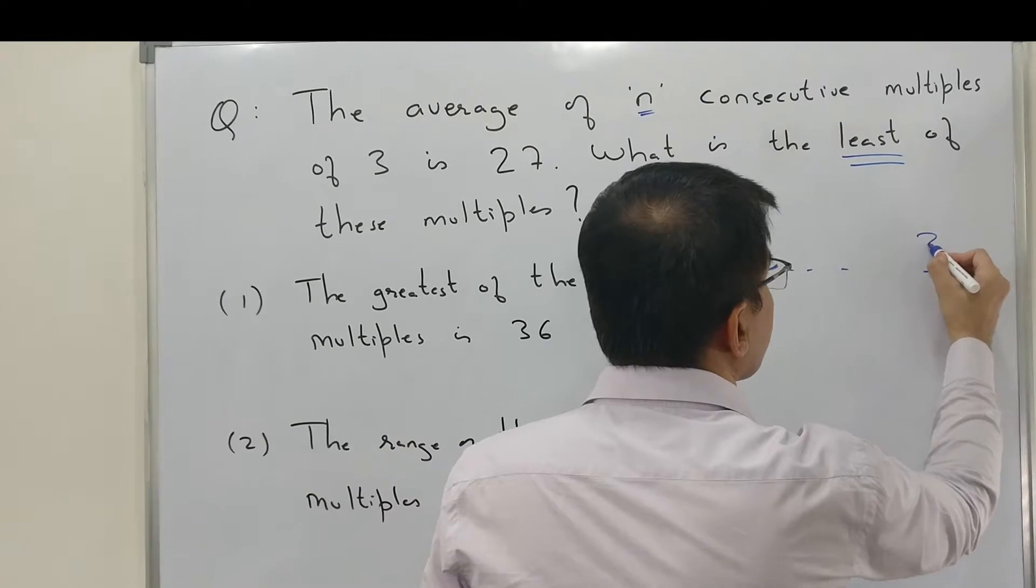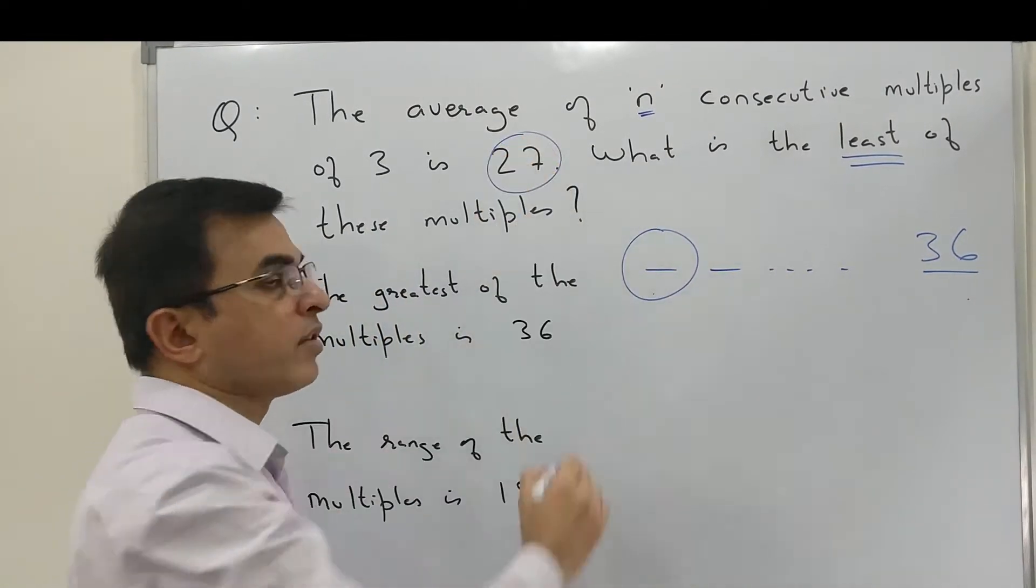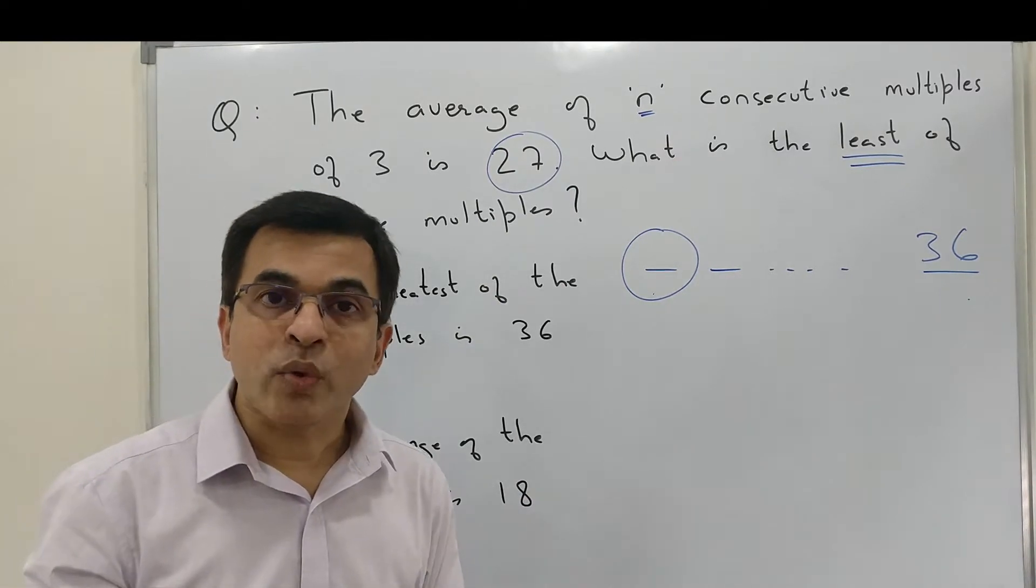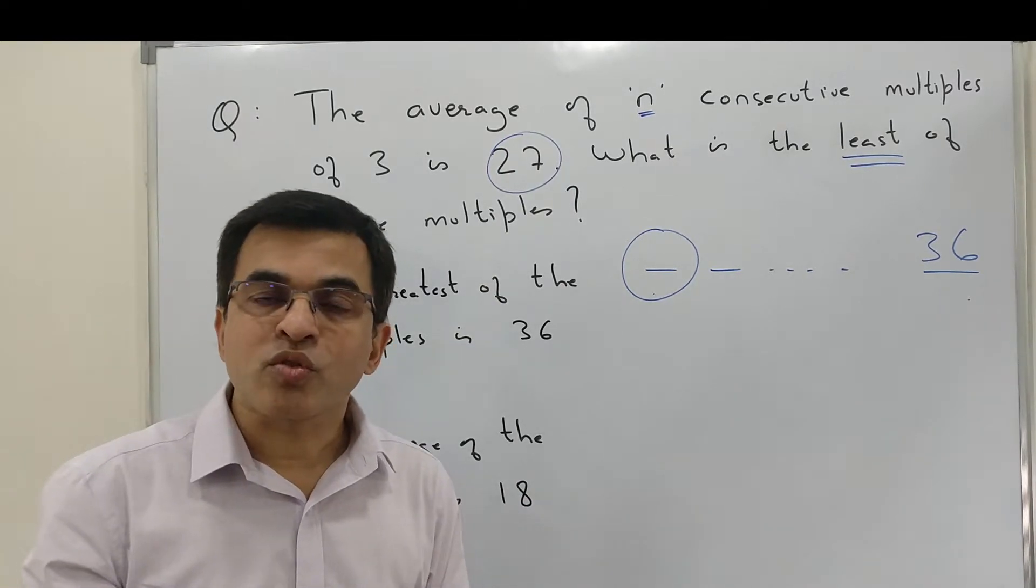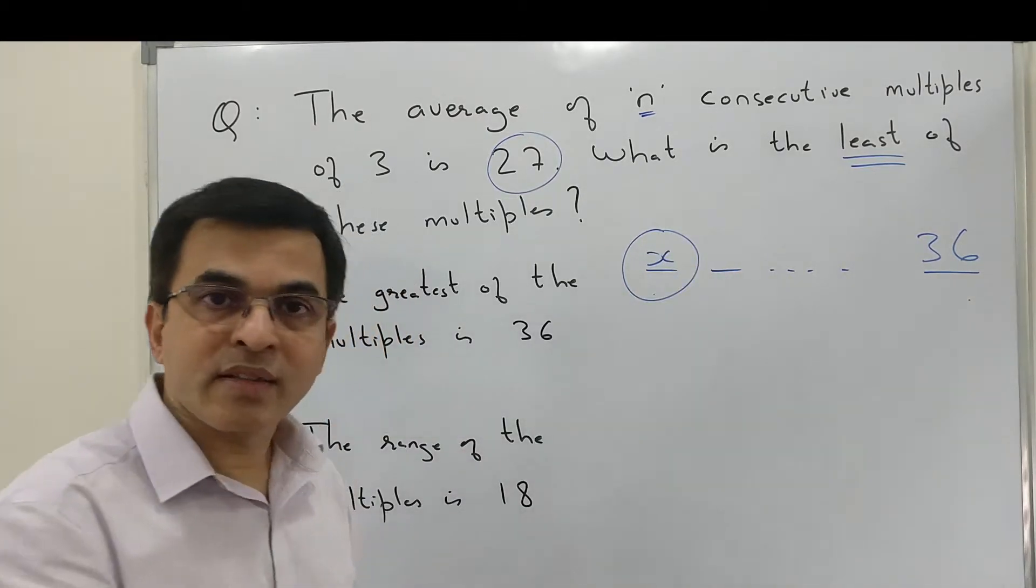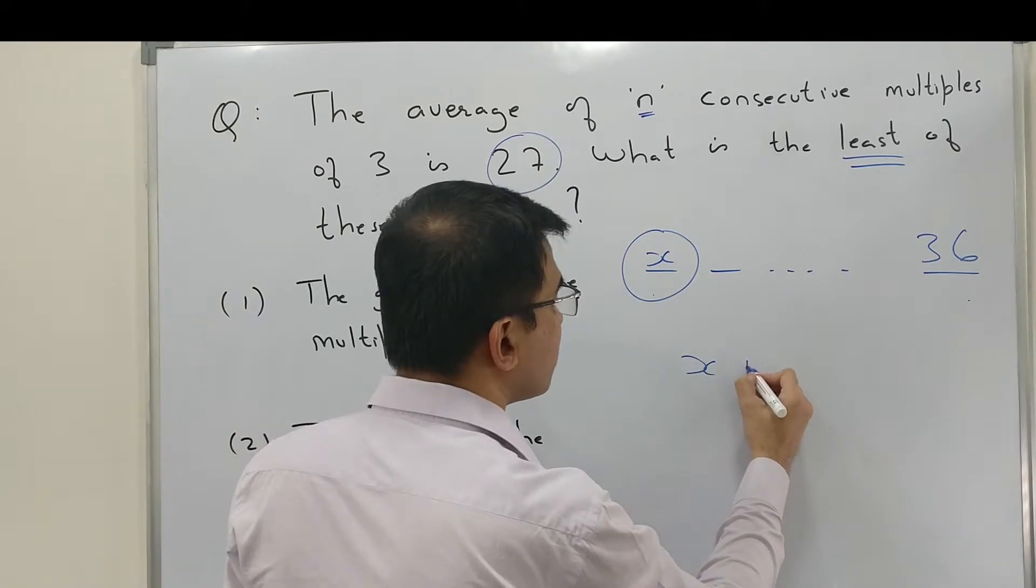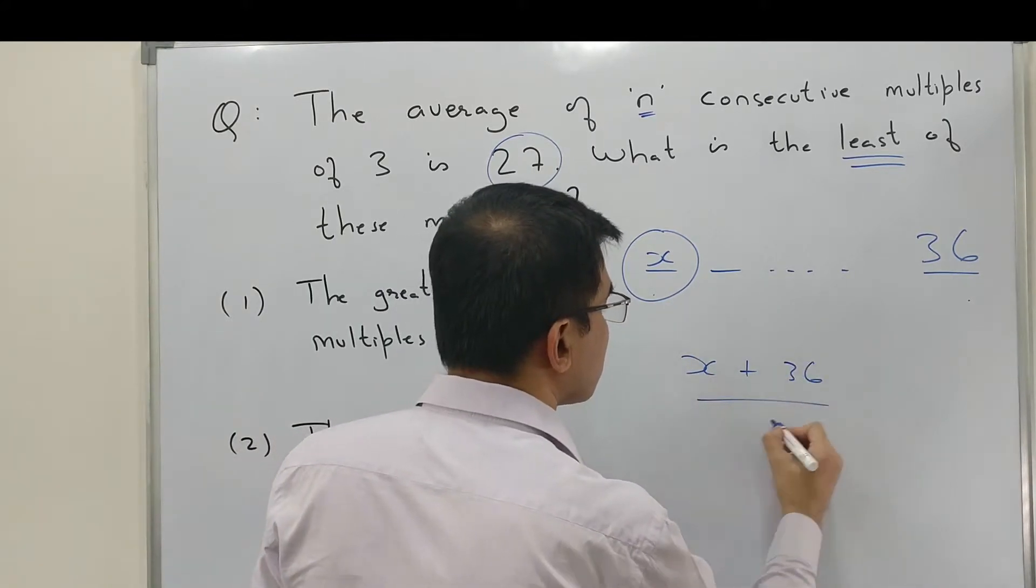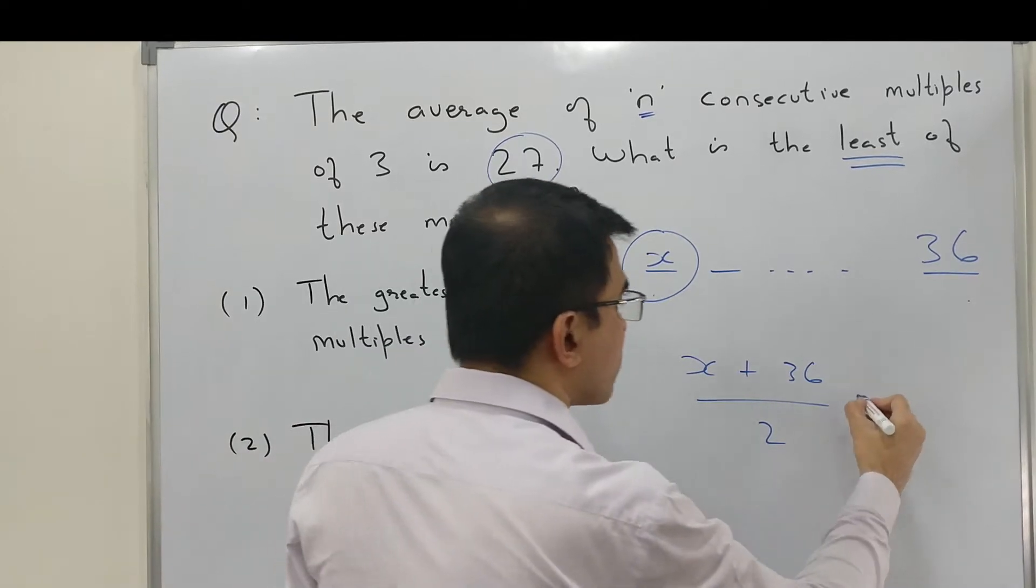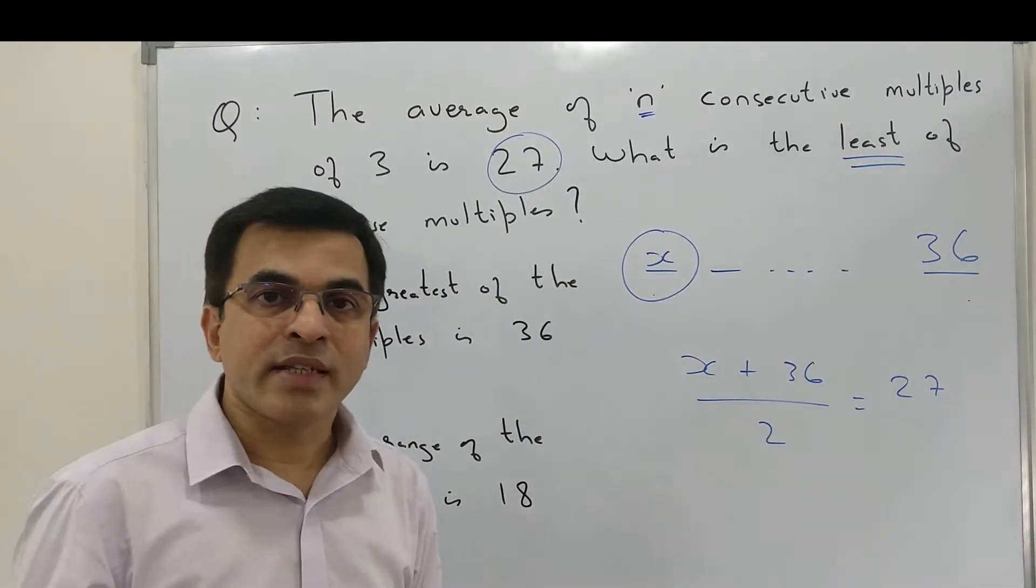And from the data we already have the average given as 27. So by making use of this property, we get - assuming that this value is X because it is missing - first term plus last term divided by 2 is equal to the average. Clearly we can see that in one step we'll be able to work out the value of X.